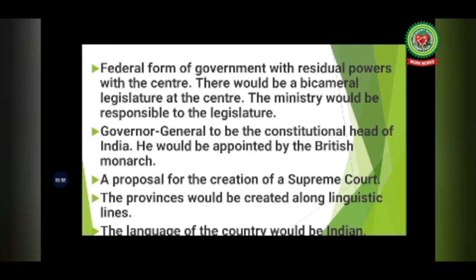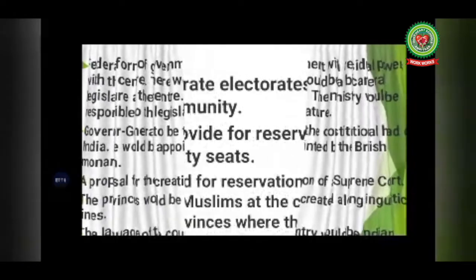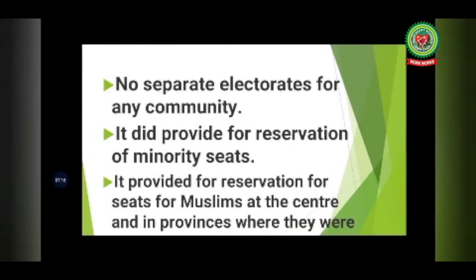The report proposed that provinces would be created along linguistic lines — not on the basis of religion but language. Hindi was recommended as the national language of India. It stood for a joint electorate — no separate electorate for any community — meaning people should not be divided on the basis of religion. However, it did provide for reservation of minority seats in both houses of the legislature, with reserved seats for Muslims at the centre and in provinces where required.